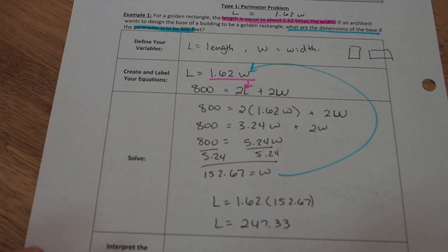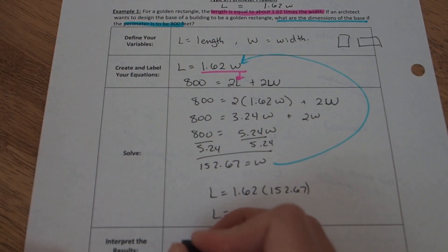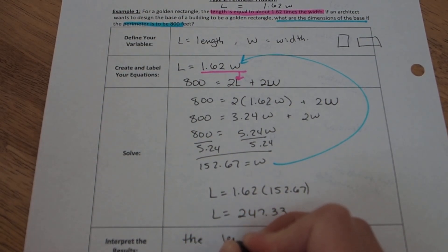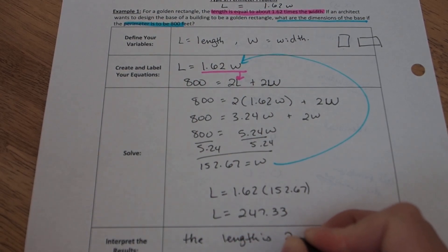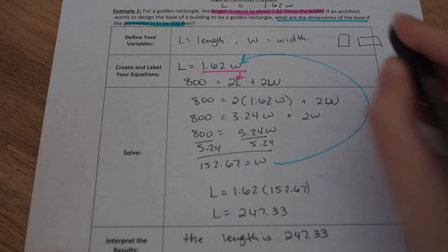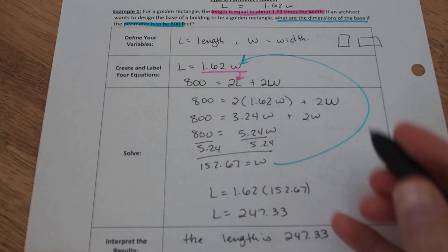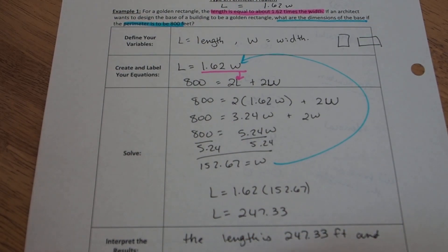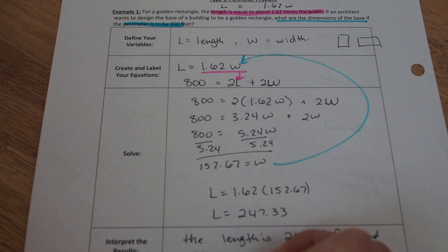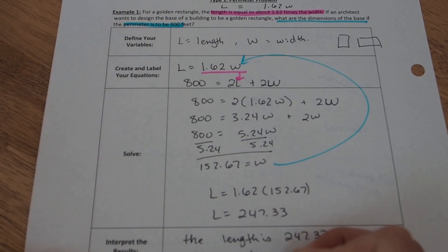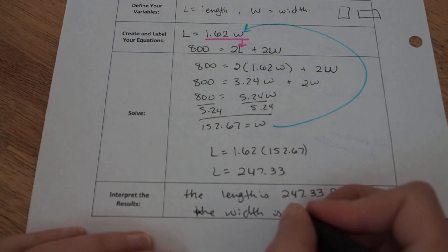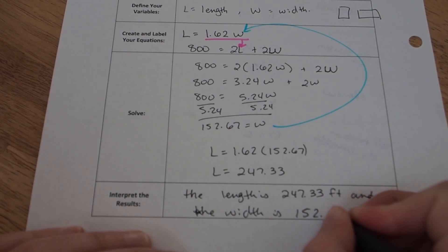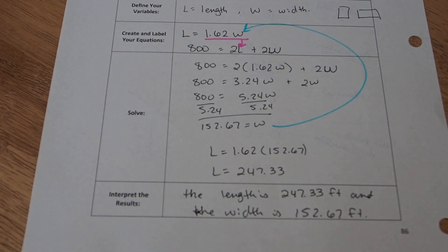And last, interpret the results. That's just a quick little sentence here. So this rectangle has a length of 247.33 feet and a width of 152.67 feet.